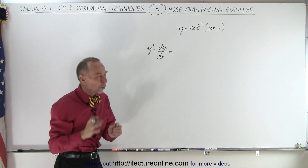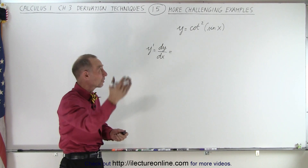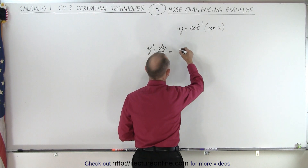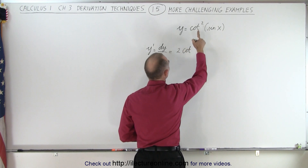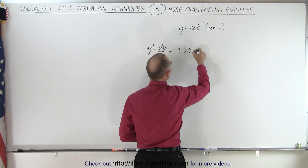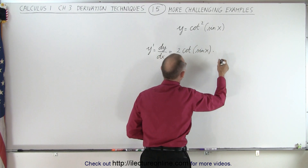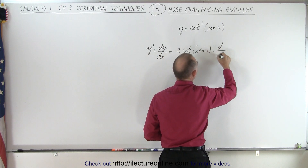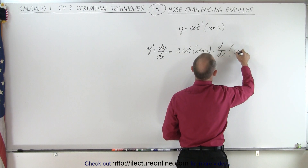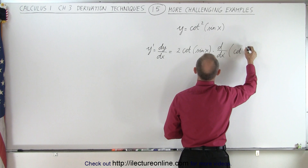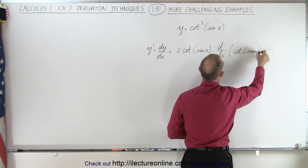We have the cotangent squared of an argument, the sine of x. Since we have an exponential, we put the exponent in front. So we have two times the cotangent to the first power of the sine of x, times the derivative — the d/dx — of the function, which is the cotangent of the sine of x.